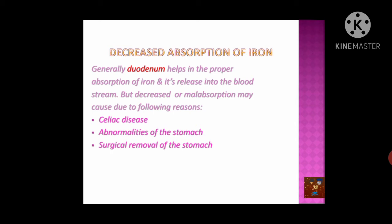Surgical removal of the stomach can cause a problem since the stomach is no longer structurally or functionally normal. Additionally, hypochlorhydria — meaning less HCl present in the stomach — or achlorhydria — meaning almost no HCl — causes loss of the acidic environment. Without that acidic environment, the conversion of ferric iron into the absorbable ferrous form cannot occur, and this too may cause iron deficiency anemia.